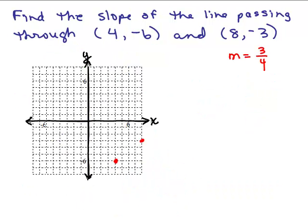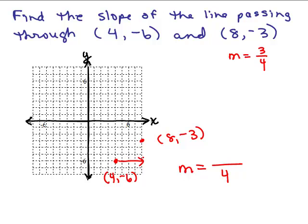Here's a graph of these two points shown as red dots. Here's (4, −6) and here's (8, −3). If I do the rise over the run, I go to the right 4 spaces and then up 3 spaces, giving a slope of 3 fourths — which is what we also got using the formula.